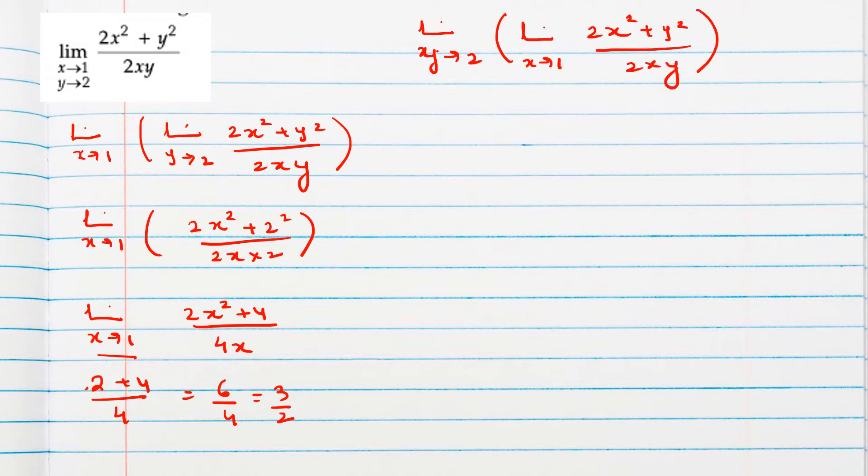And then y tends to 2. So it will be 2 plus y square divided by 2y. Then, if we substitute y value, 2 plus 2 square divided by 2 into 2.